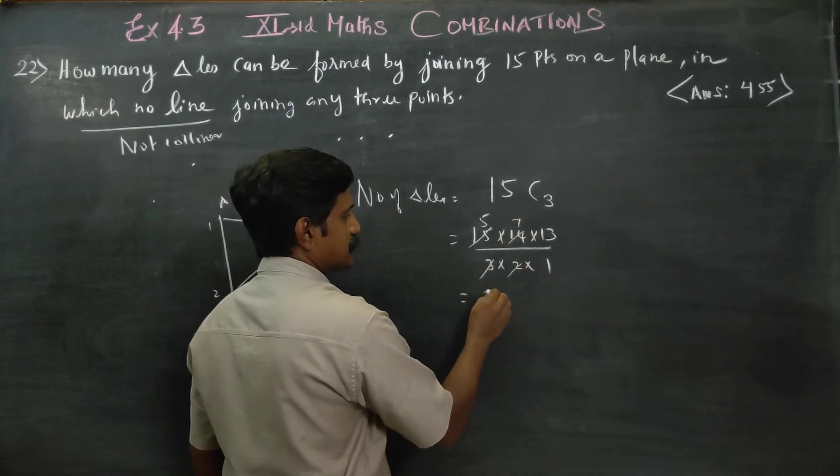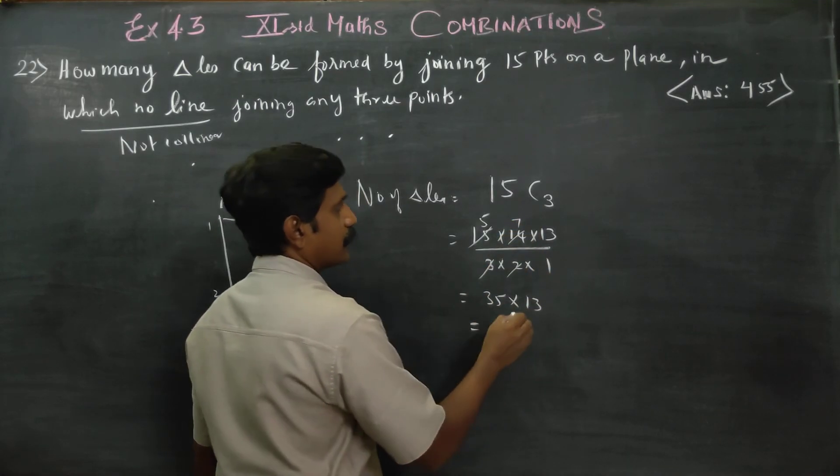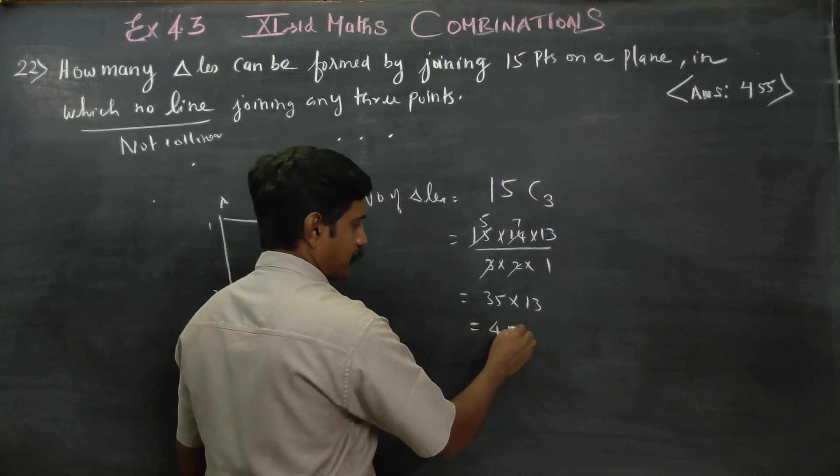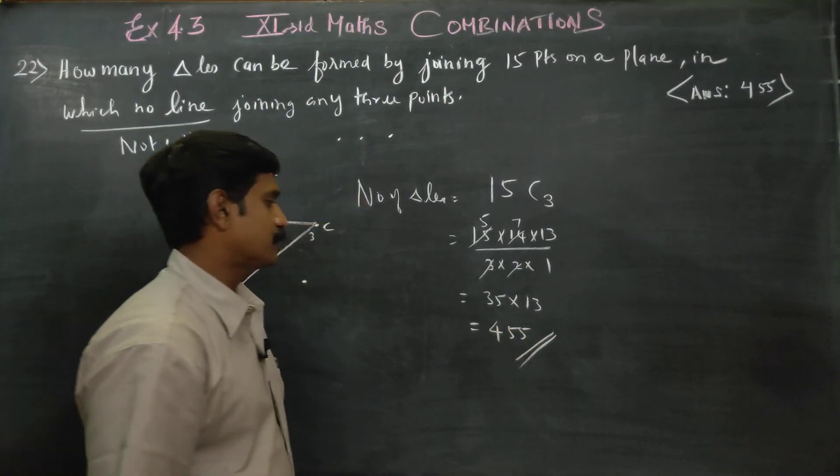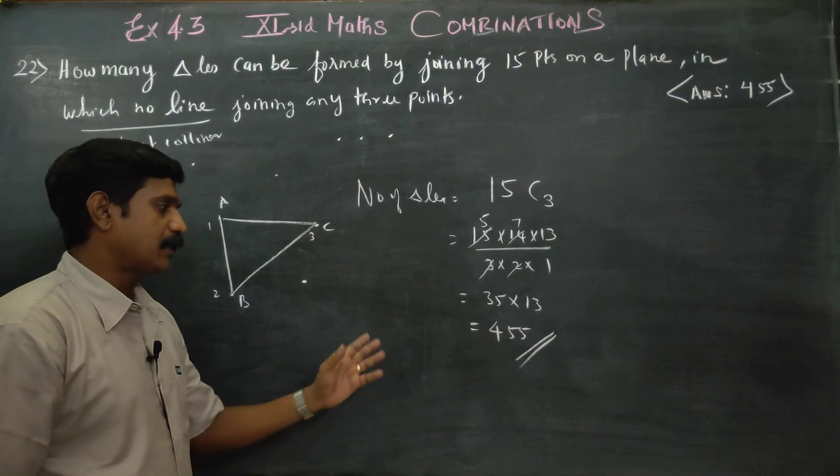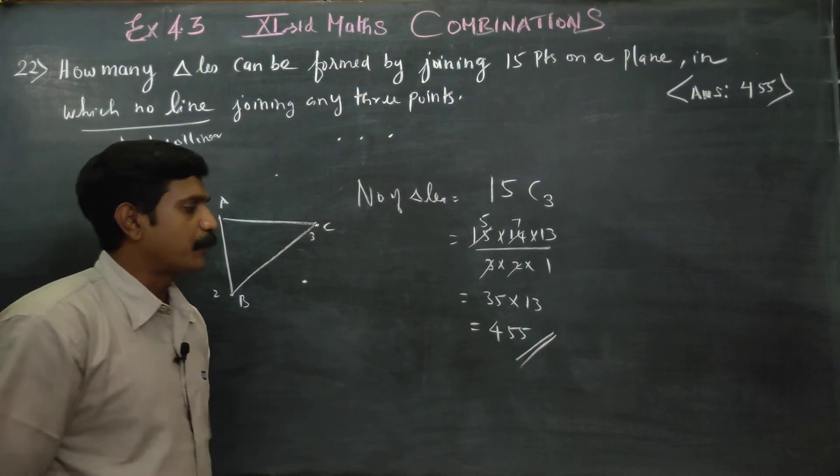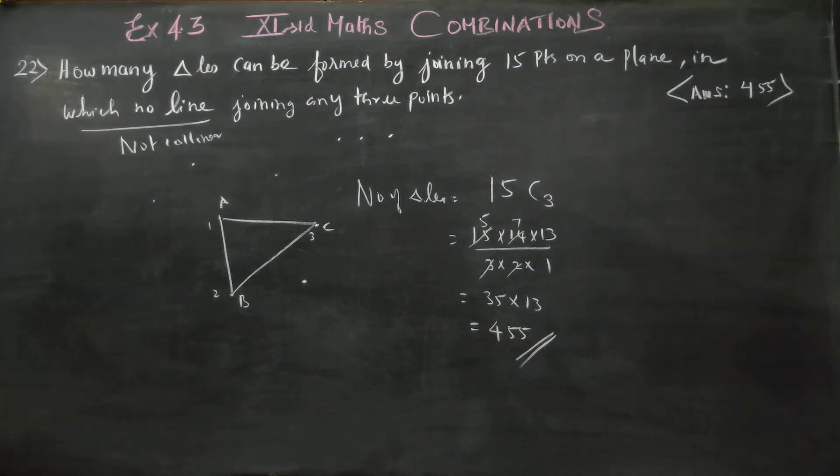35 × 13 equals 455. You will be getting 455. Check: 35 × 13 = 350 plus 105 = 455. That will be the answer. Please check it.